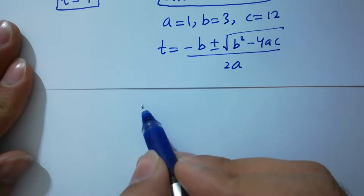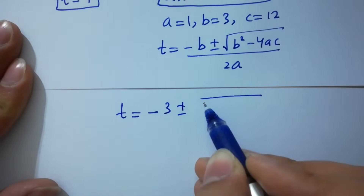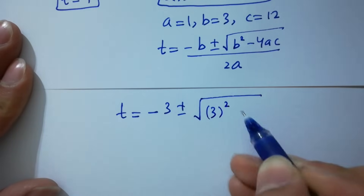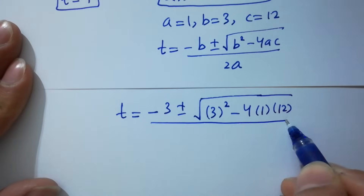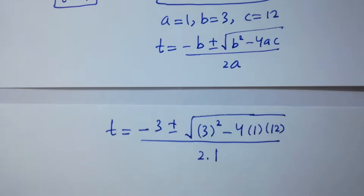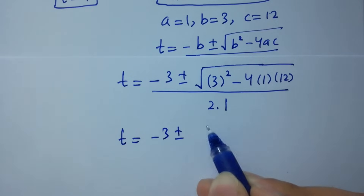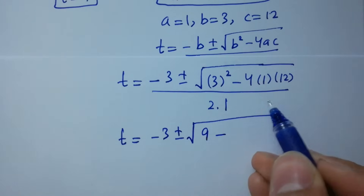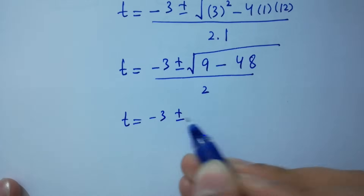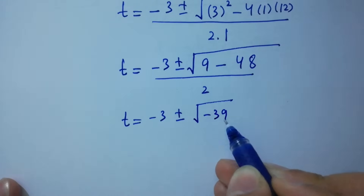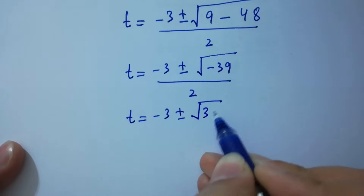Substituting values: t equals minus 3 plus or minus square root of 3 squared minus 4 times 1 times 12, over 2 times 1. This gives t equals minus 3 plus or minus square root of 9 minus 48, over 2, which is minus 3 plus or minus square root of minus 39, over 2.